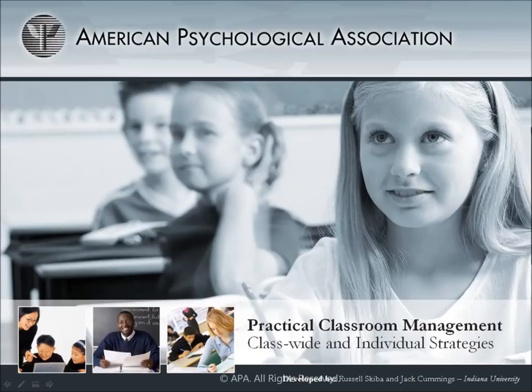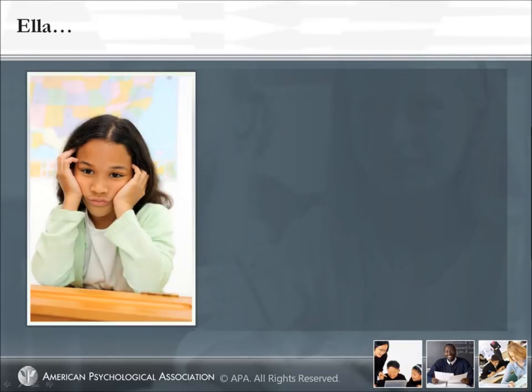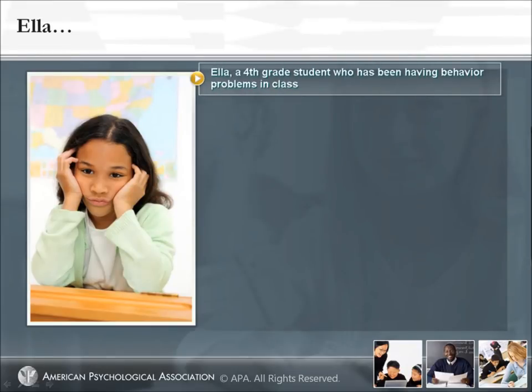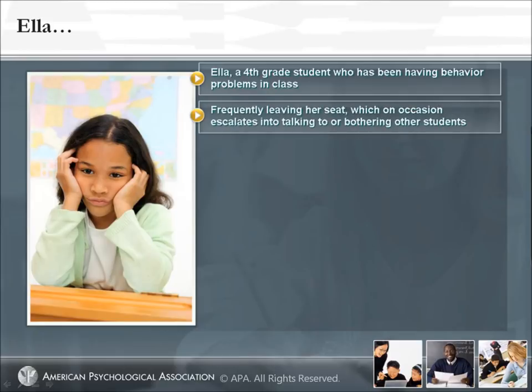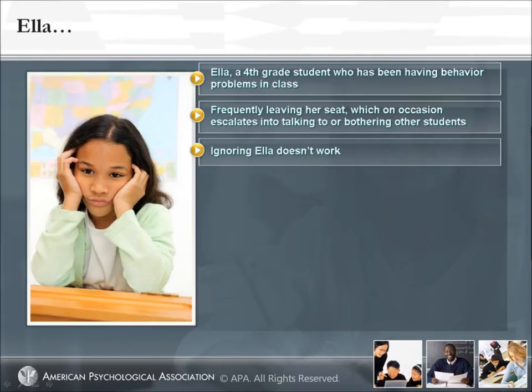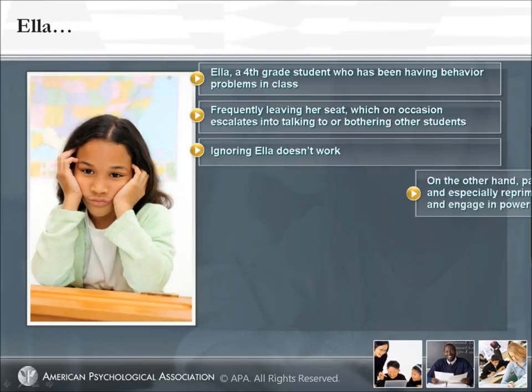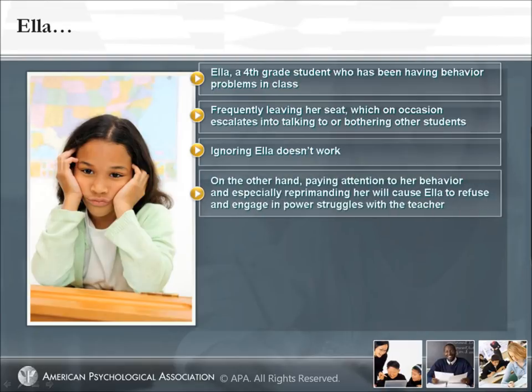Consider the following two scenarios. The first is Ella, a fourth-grade student who has been having behavior problems in class. She's frequently leaving her seat, which on occasion escalates into talking to or bothering other students. She shows noncompliance and occasional disobedience when asked to return to her seat. Ignoring Ella doesn't work — she simply seems to escalate from wandering to talking to bothering. On the other hand, paying attention to her behavior and especially reprimanding her will cause Ella to resist and engage in power struggles with the teacher.